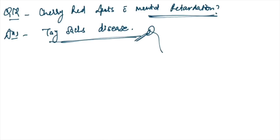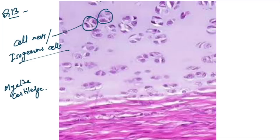This histology image was given. You can appreciate cell nests and isogenous cells were given. Which cartilage? They are seen in hyaline cartilage.